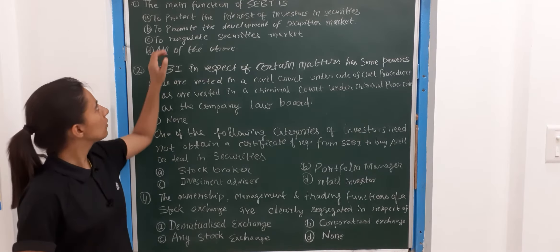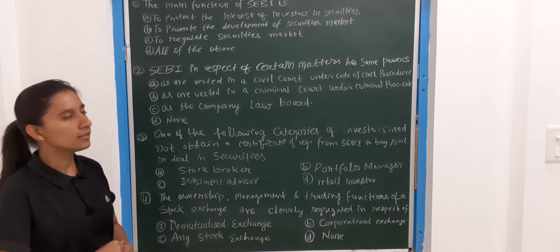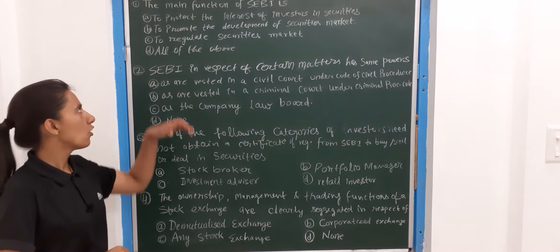The main function of SEBI is: A option is to protect the interest of investor in securities, B option is to promote the development of securities market, C option is to regulate securities market, D option is all of the above. The correct choice here is all of the above — these are the functions of SEBI.